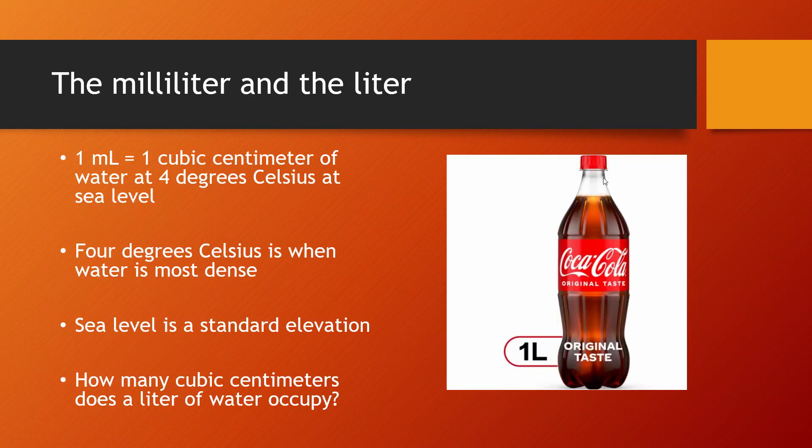The milliliter and the liter. One milliliter is one cubic centimeter of water at four degrees Celsius at sea level. Why those specificities? Because water is densest at four degrees Celsius, and because sea level is just something that is very replicable throughout the world — 75% of the world is at sea level.